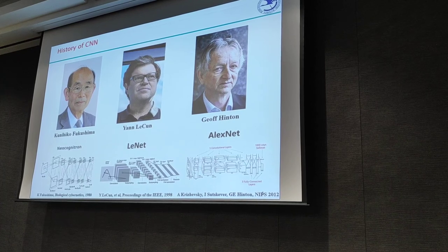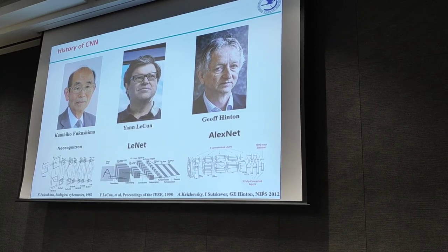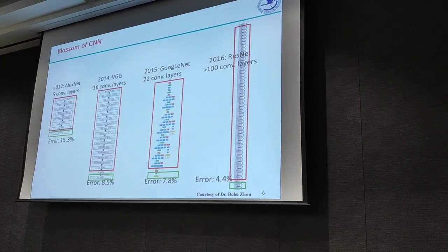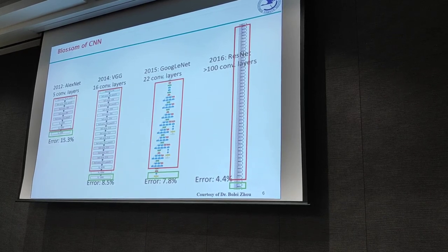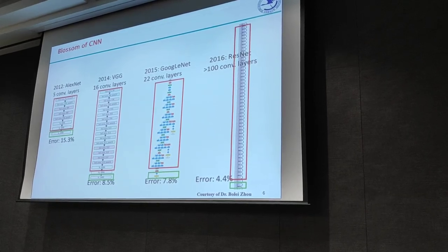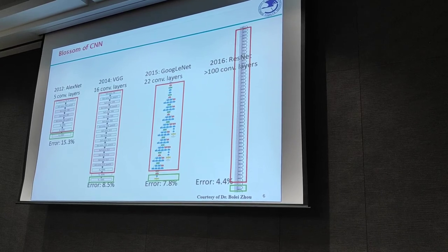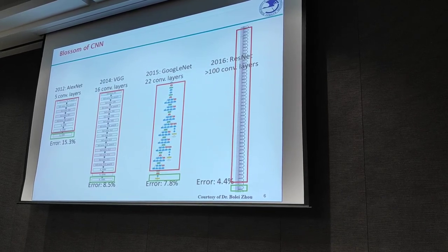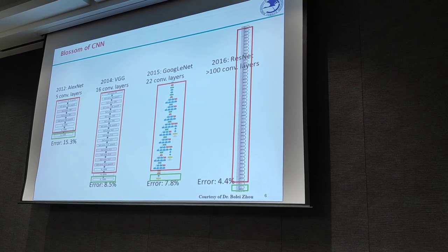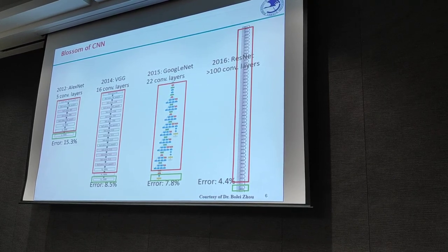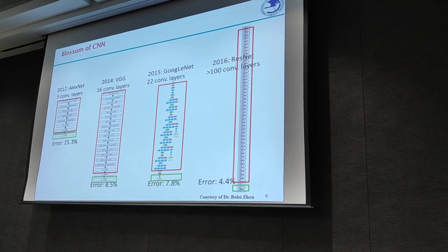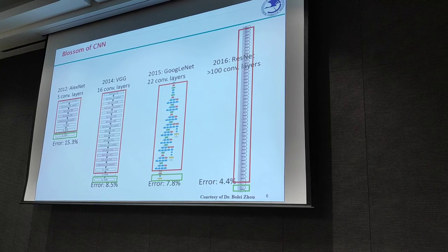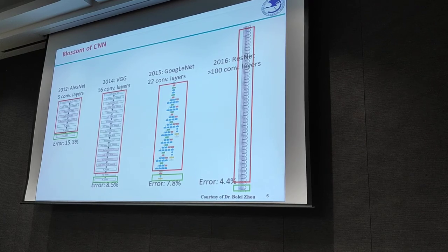Each node takes input from other nodes and sends output to others. Massive nodes are organized in hierarchical layers. Powered by massive data and modern CPUs and GPUs to train such enormous models, the convolutional neural network blossomed in a way no one expected. New architectures like AlexNet, VGGNet, GoogleNet, and ResNet pushed the number of convolutional layers from 5 to over 100 in just 4 years, becoming the winning architecture for object and facial recognition.